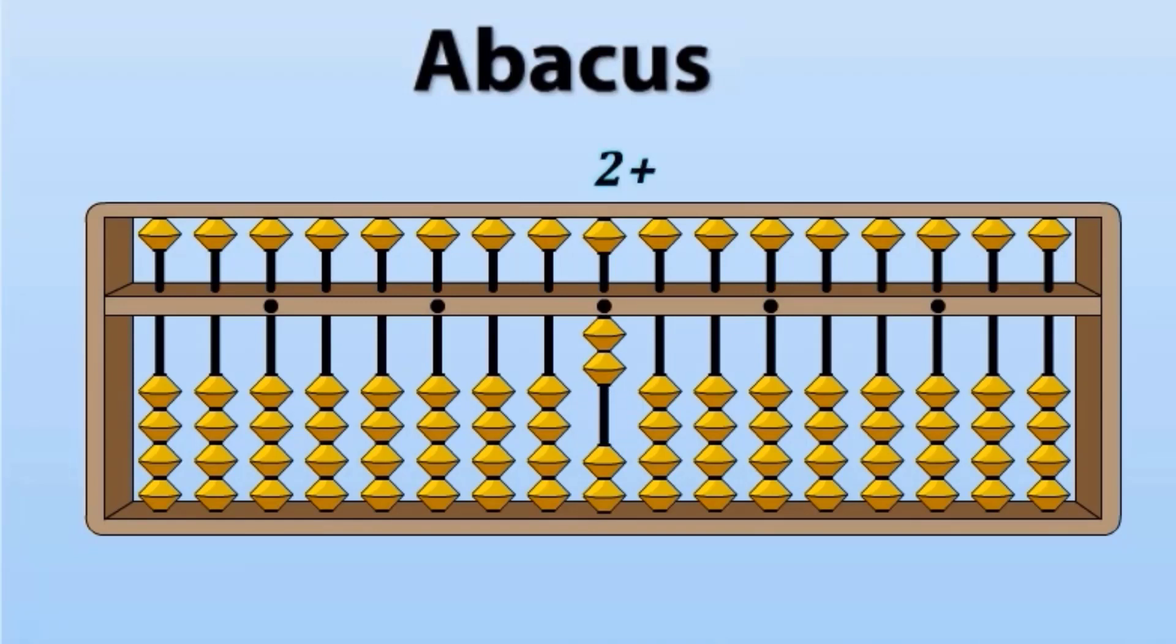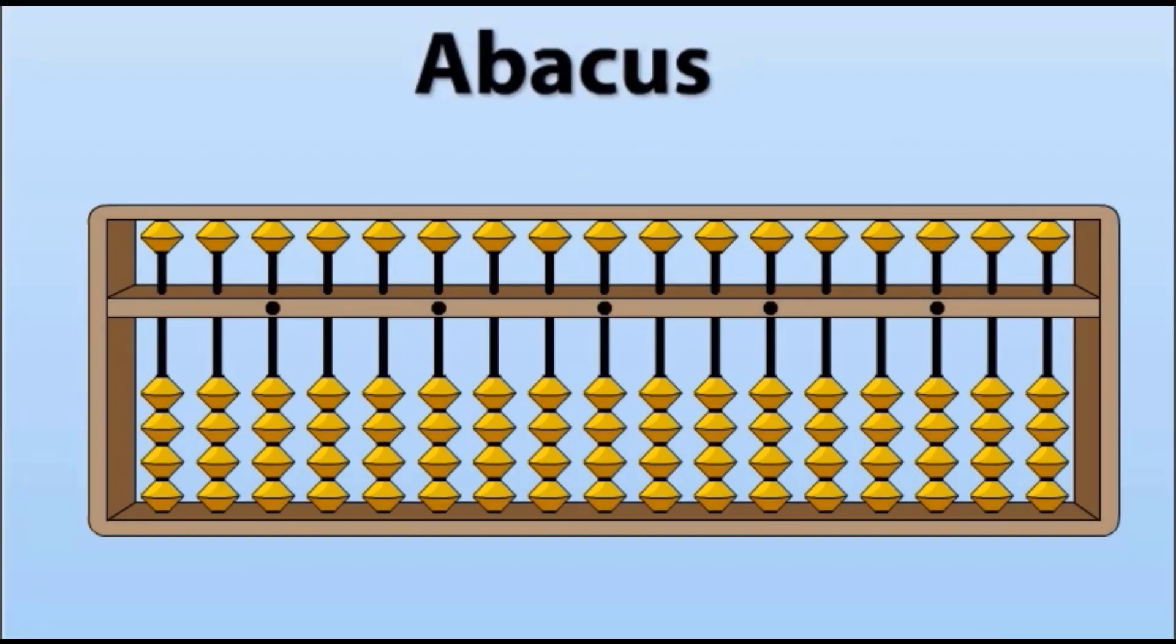2 plus 5 minus 1 plus 3 minus 5. Answer is 4. So, I hope that now the basics of abacus will be clear to you.